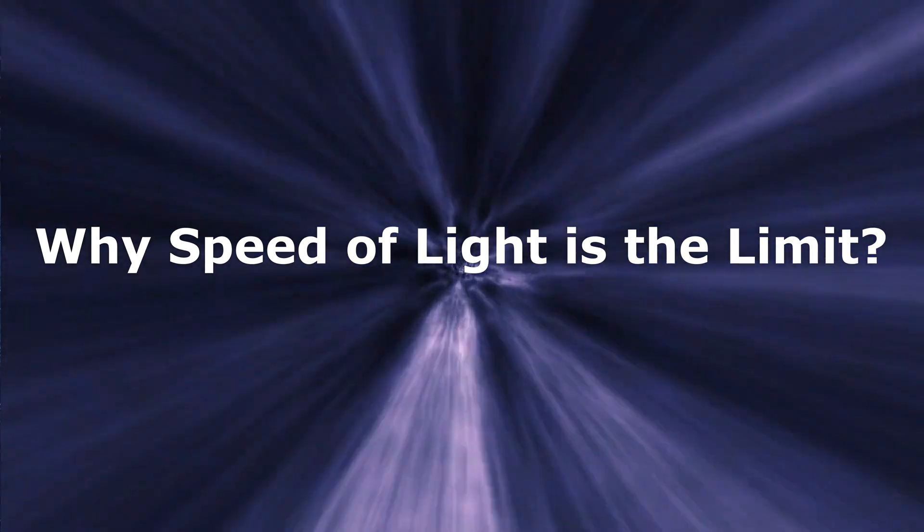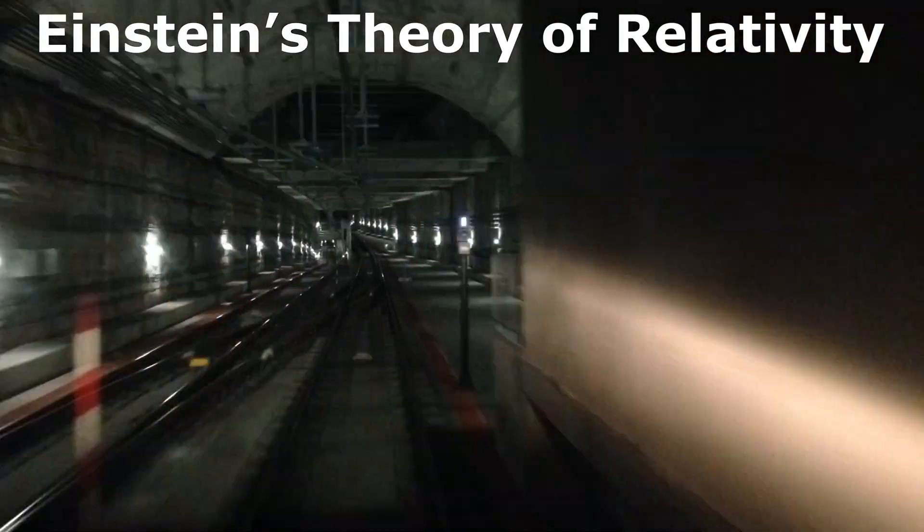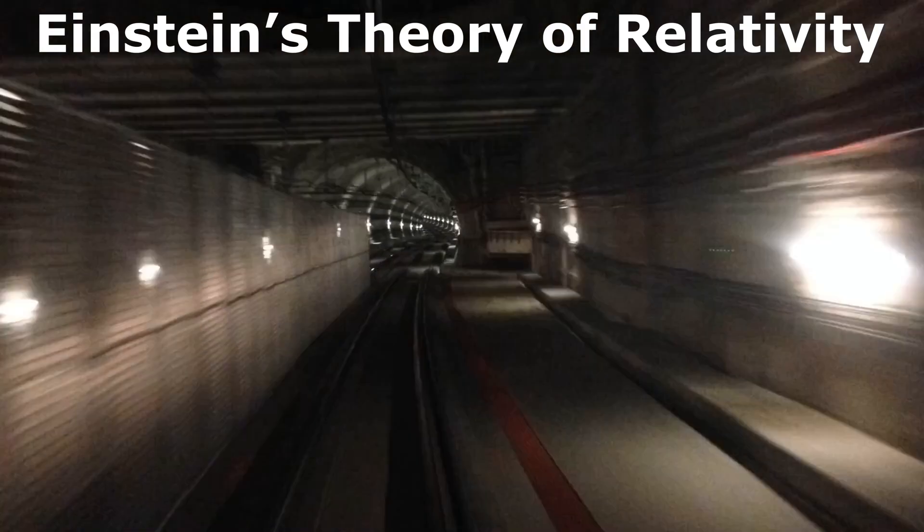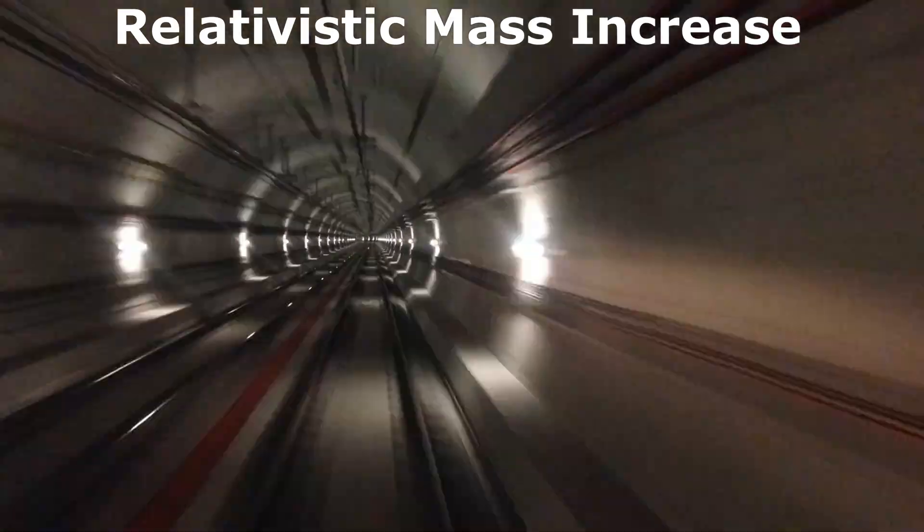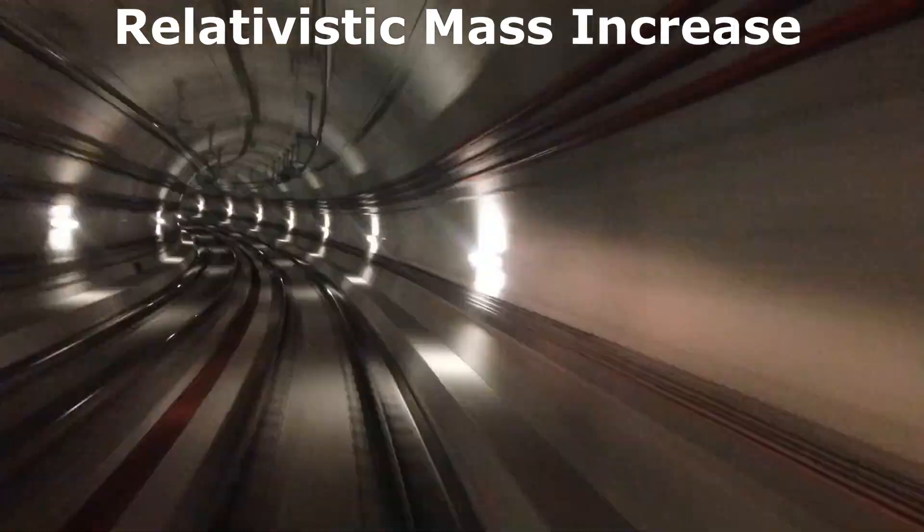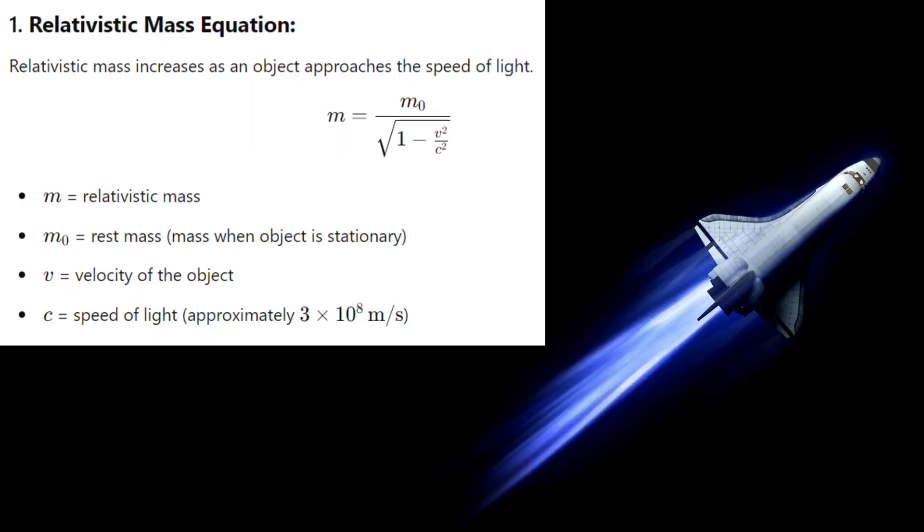Here is why light speed is the limit. According to Einstein's theory of relativity, as something moves faster, it gets heavier and becomes infinitely heavy at the speed of light. Therefore, it needs infinite energy to move faster,